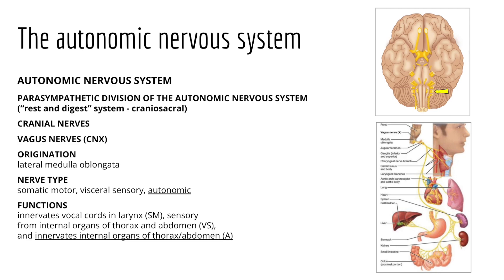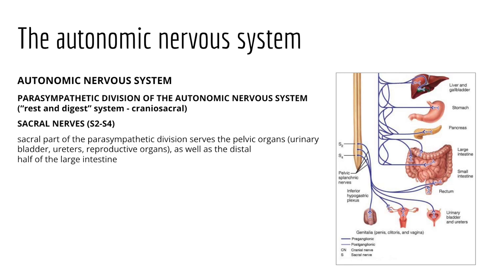The remaining visceral organs of the lower abdominal and pelvic region are innervated parasympathetically by sacral nerves S2 through S4. The lower large intestine, urinary system, and reproductive system all receive parasympathetic activity from S2 through S4.